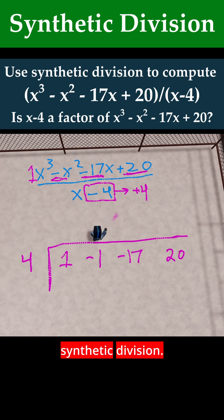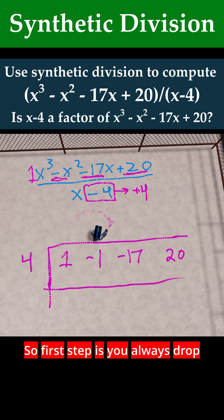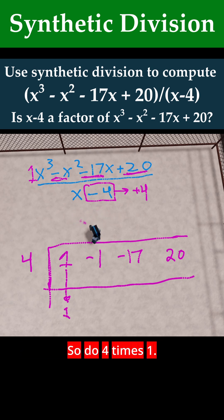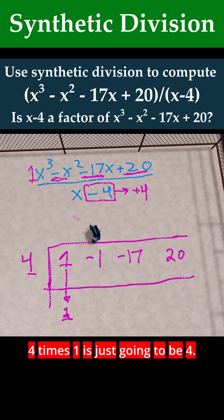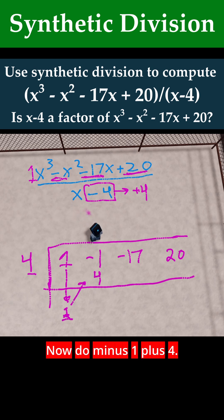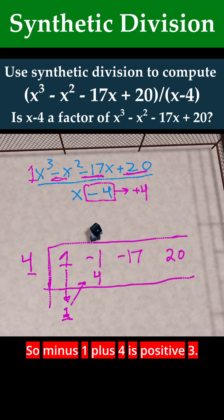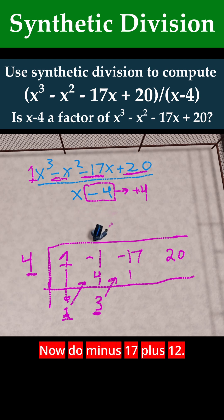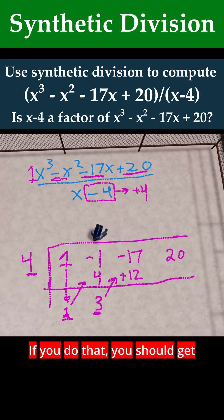Now proceed with synthetic division. The first step is to always drop down the first number inside the table, so drop down the 1. Then multiply and add: 4 times 1 is 4. Now do minus 1 plus 4 — you add these numbers — so minus 1 plus 4 is positive 3. Now do 4 times 3, which is 12. Then minus 17 plus 12 gives minus 5.